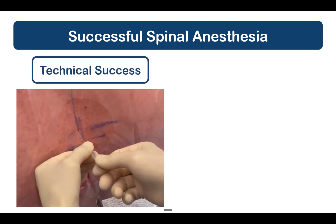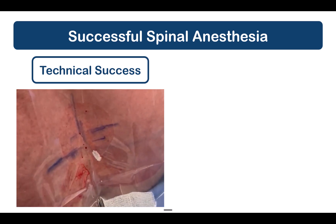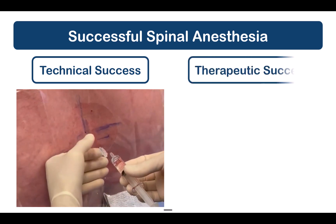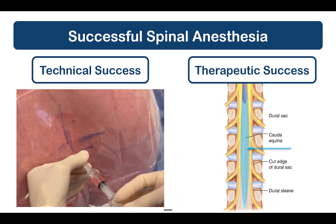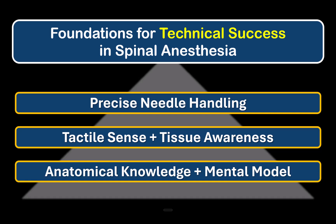Successful spinal anesthesia requires two things to happen. First, that we get the needle into the vertebral canal and intrathecal space to deliver local anesthetic. And second, that the drug we inject results in adequate surgical anesthesia for the specific operation in question. Failing to achieve the first step is technical or primary failure, which is what defines difficulty in spinal anesthesia for most of us. This video will describe what I consider to be the three foundational skill sets for technical success when performing spinal anesthesia.